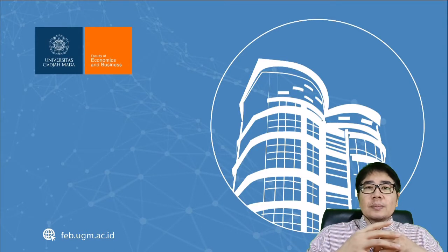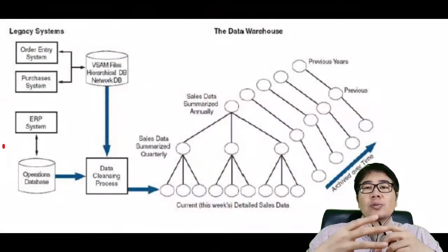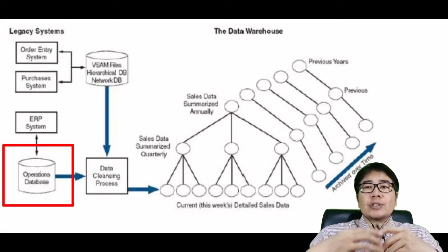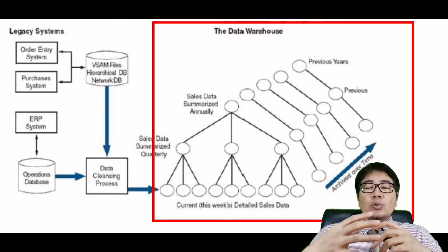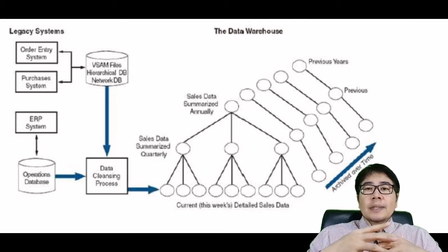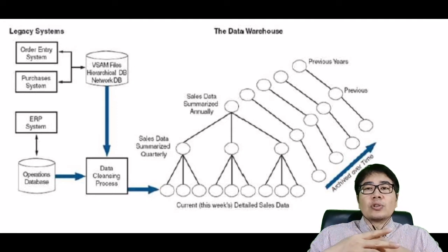Although ERP has a centralized database system, in practice it usually has two types of databases. The first is the operational database, which captures all transactional data inside the ERP system. The second is the data warehousing system, where data is structured and standardized so it can be used by all information system resources inside the company through the ERP system.